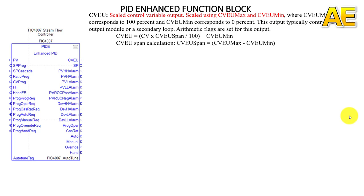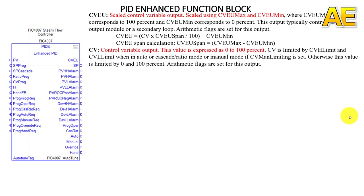This is how we calculate CV EU and the CV EU span calculation. The next output is CV — the control variable output, expressed as 0 to 100%. CV is limited by CV high limit and CV low limit when in auto, cascade, or ratio mode and manual mode if CV manual limiting is set. Otherwise, this value is limited by 0 and 100%.